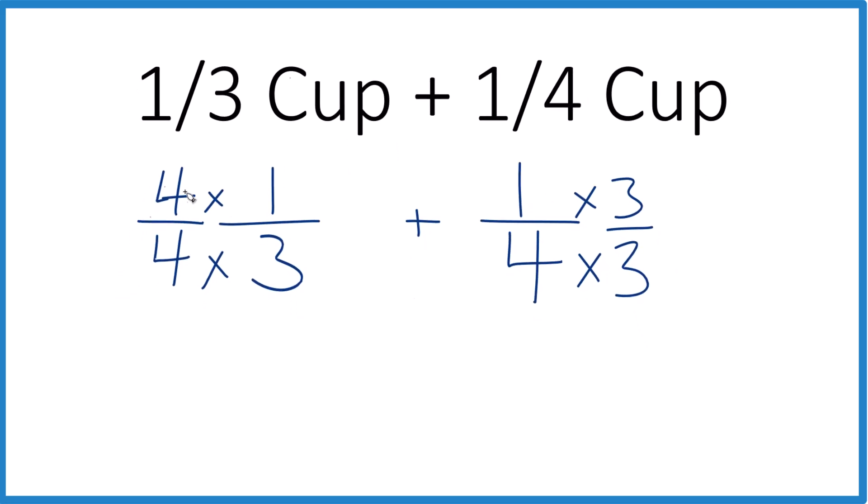So now we have 4 times 1 is 4, 4 times 3 is 12. And 4 over 12, that's the same as 1 over 3. Plus 1 times 3 is 3, and 4 times 3 is 12.